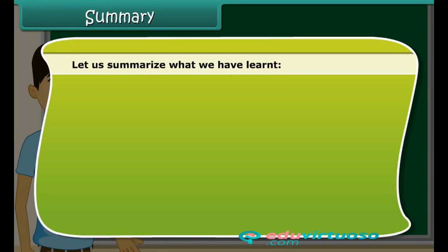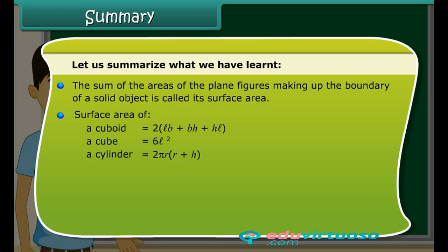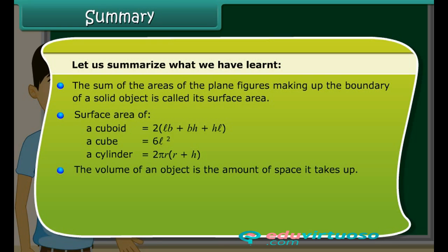Let us summarize what we have learned. The sum of the areas of the plane figures making up the boundary of a solid object is called its surface area. Surface area of a cuboid is equal to 2(LB + BH + HL). The volume of an object is the amount of space it takes up. Volume of a cuboid is L × B × H. Volume of a cube is L³. Volume of a cylinder is πr²h.